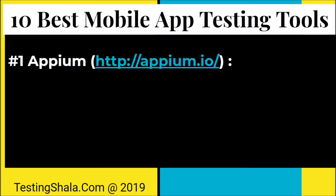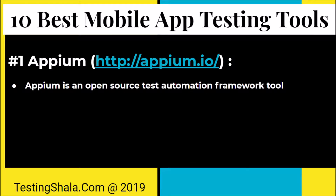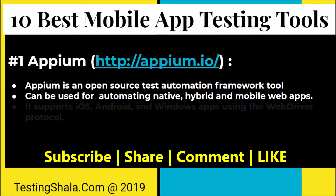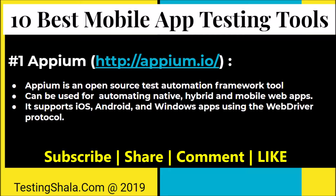The first tool is Appium. Appium is an open source test automation tool, completely available free of cost. Appium can be used to automate native apps, hybrid apps, and mobile apps. Appium supports iOS, Android, and Windows apps using the WebDriver protocol.